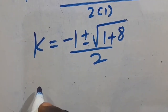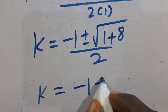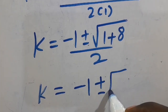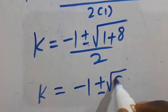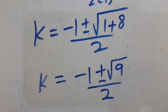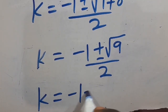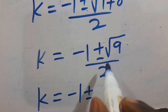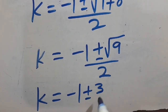So we have K equals negative 1, plus or minus the square root of 1 plus 8, which gives us 9, divided by 2. The square root of 9 gives us 3, so K equals negative 1, plus or minus 3, divided by 2.